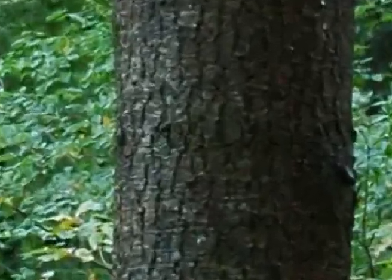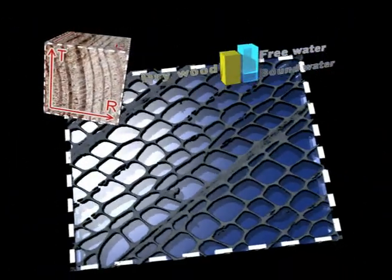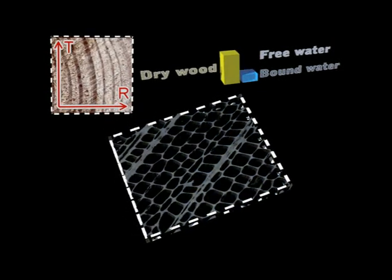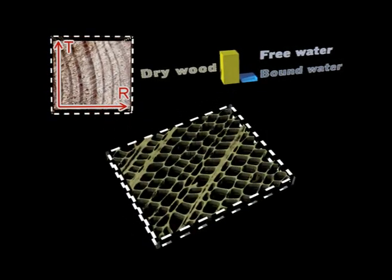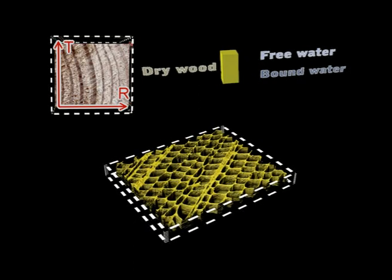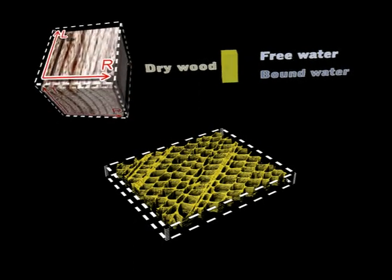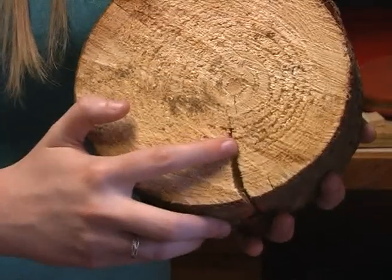In a standing tree, the wood contains water rather than air — the water it needs to stay alive. Some of the water is so tightly linked to the molecules in the cell wall that when we take the wood out of the tree and dry it, the wood shrinks, which is why this piece is split.